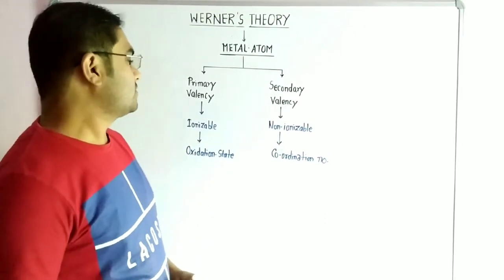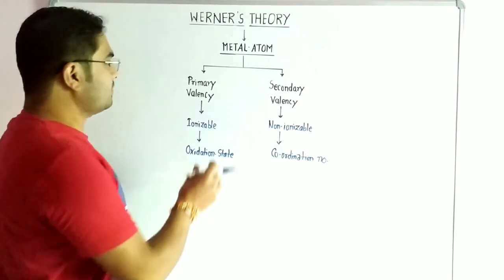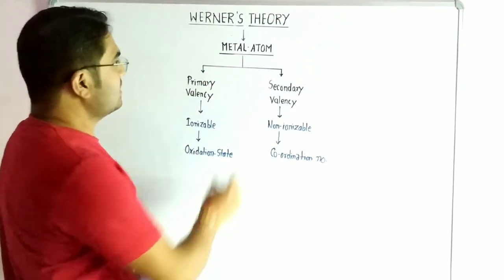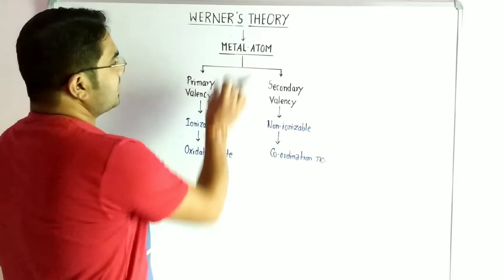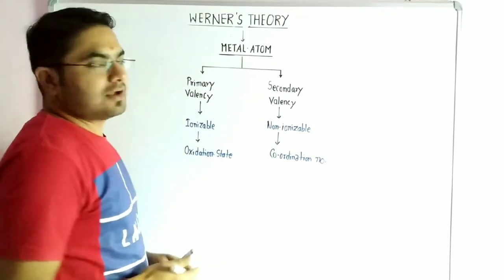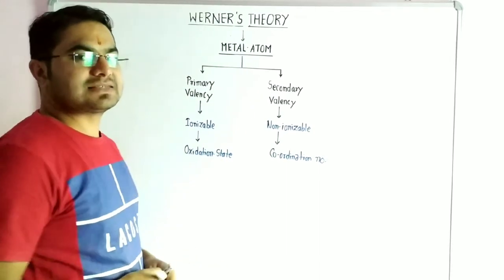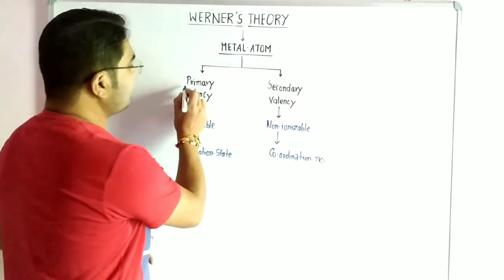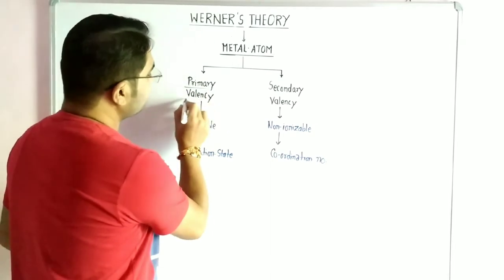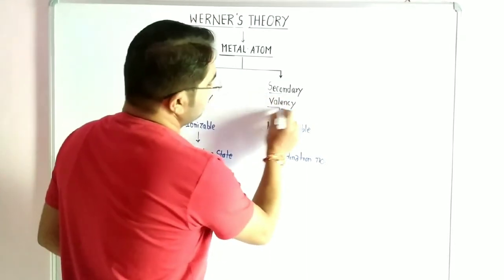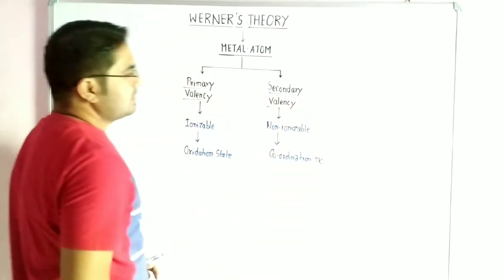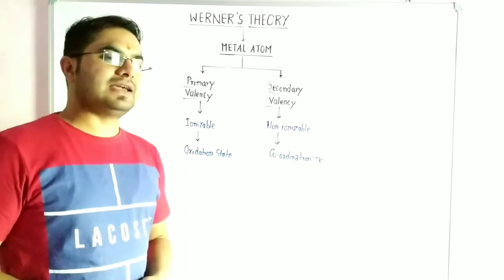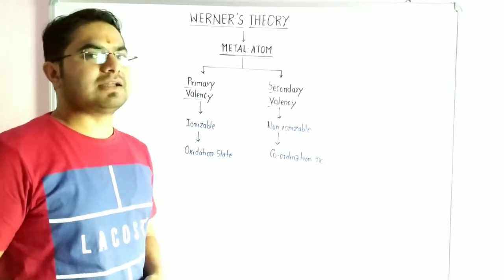The main postulates of this theory state that the metal atom, or the complex, is divided into two categories: primary valency and secondary valency. These are the two key terms used in Werner's theory.